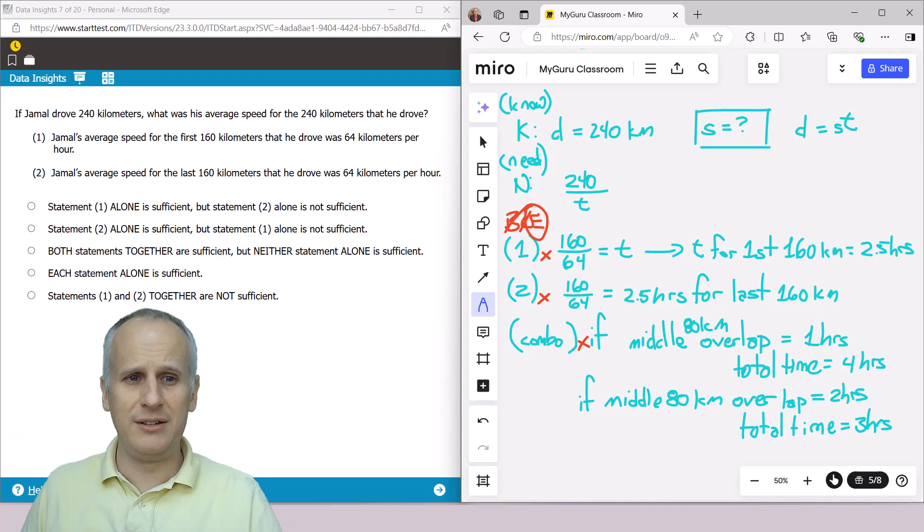And hopefully you can see how by really doing this more technically, you're able to identify kind of the trap answer of C in this instance and get to the right one, which instead is choice E.